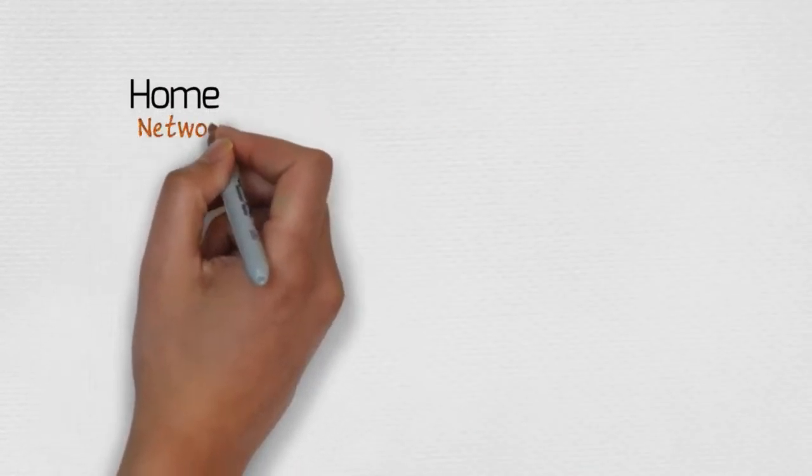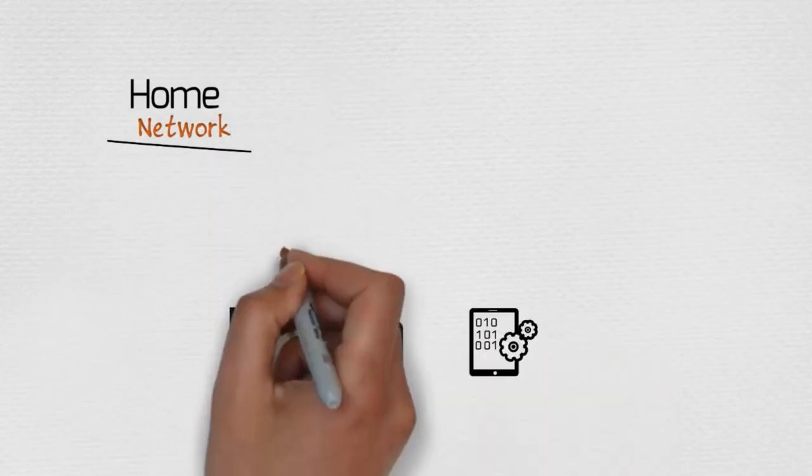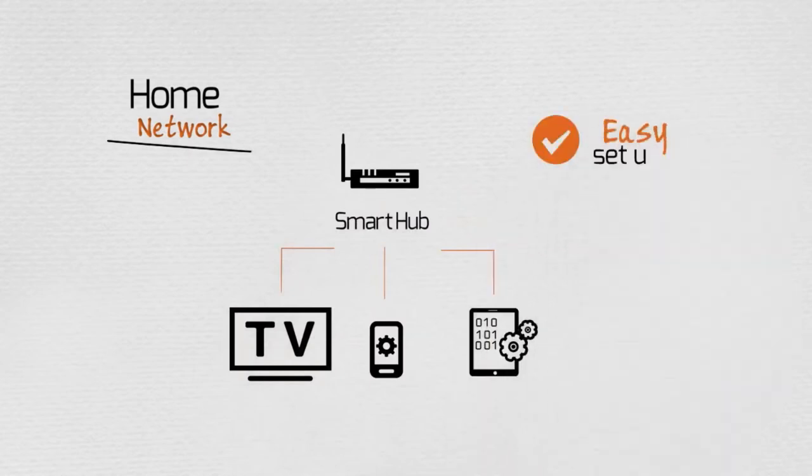Some of these risks are already emerging. For example, many Internet of Things devices in our homes can be connected to a smart hub for easier setup and use.